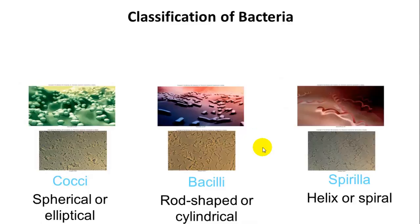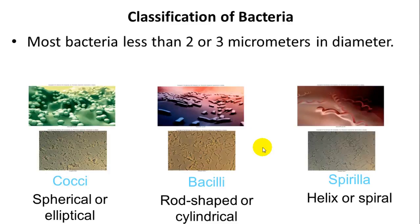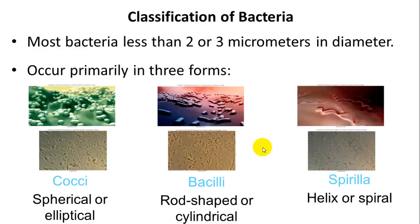Bacteria can be classified in many different ways. Most are less than two or three micrometers in diameter, so they are very small — smaller than most other cells. They occur primarily in three shapes: cocci, which are round or spherical; bacilli, which are rod-shaped; and spirula, which are spiral-shaped. They can also be aggregated in clumps, strings, or singular forms.